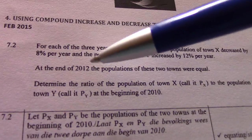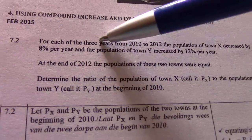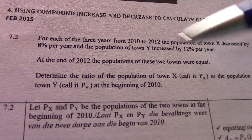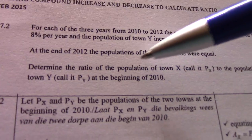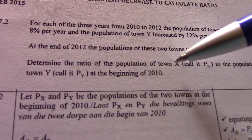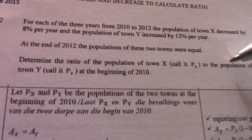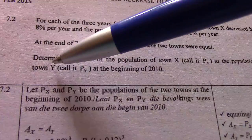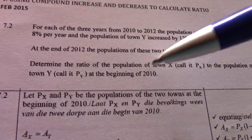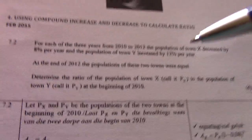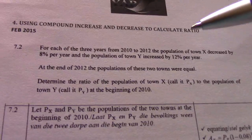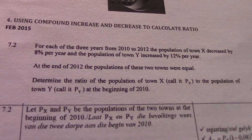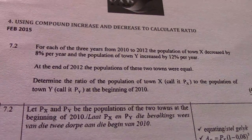At the end of 2012 — so at the end of the three years — the populations of these towns were equal. Determine the ratio of the population of town X, call it PX, to the population of town Y, call it PY, at the beginning of 2010. Read through it again if needed.